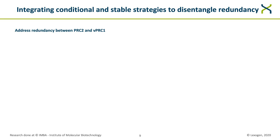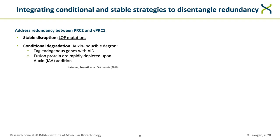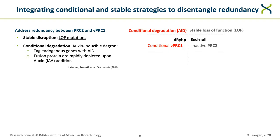To test this hypothesis, we combined conditional and stable genetic perturbations to disentangle the redundancy between PRC2 and variant PRC1. Since double but not single disruption is lethal in embryonic stem cells, we stably disrupted one complex and conditionally disrupted the second, using loss-of-function mutations for the stable approach and the auxin-inducible degron system for the conditional part. This system consists of a degron tag introduced in both alleles of the endogenous gene, inducing rapid degradation by targeting it to the proteasome only in the presence of the phytohormone auxin.